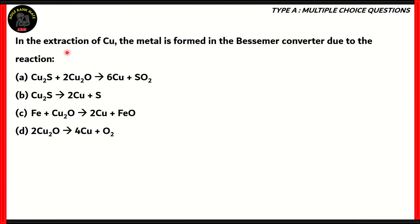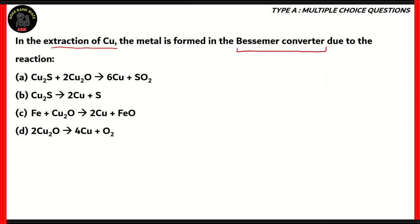Let's look at this question. In the extraction of copper, the metal is formed in the Bessemer converter due to the reaction. The options are: (A) Cu2S + 2Cu2O gives 6Cu + SO2; (B) Cu2S + 2Cu gives Cu2S, giving 2Cu + S; (C) Fe + Cu2O gives 2Cu + FeO; (D) 2Cu2O gives 4Cu + O2. So, how do we solve this question? It says we're undergoing the extraction of copper and the reaction occurring in the Bessemer converter is asked for.